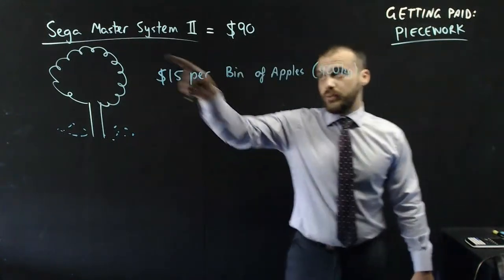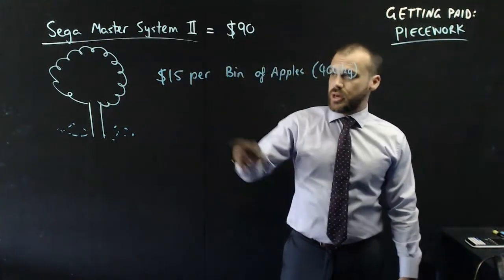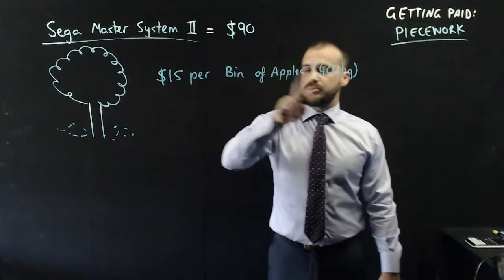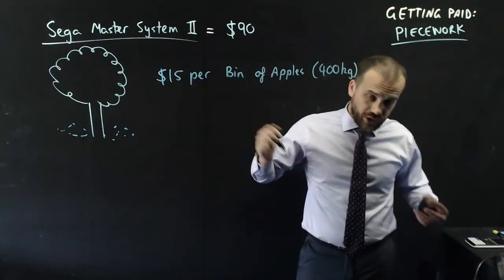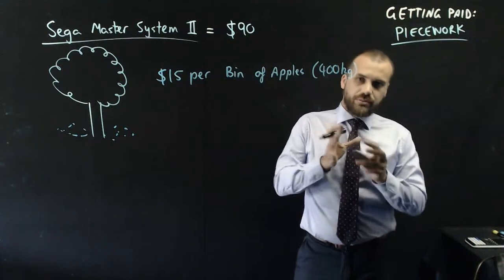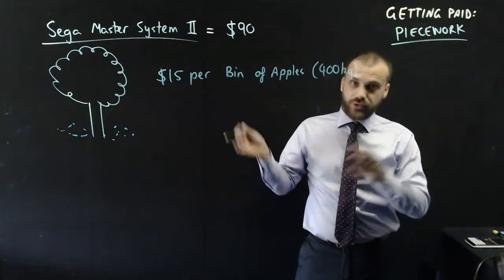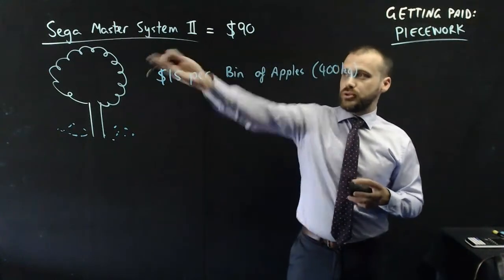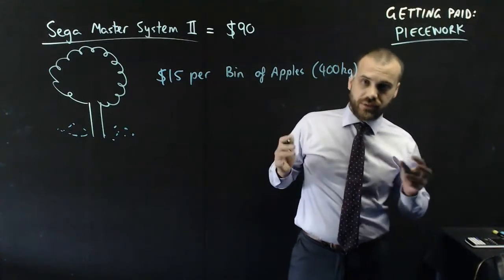So, put two and two together here. We want the Sega Master System - it's $90. We're getting paid $15 per bin of apples. Each bin is 400 kilograms. How many kilograms of apples did my brother and I have to pick up off the ground and put into the bins in order to fulfill our dream of buying the Sega Master System 2?